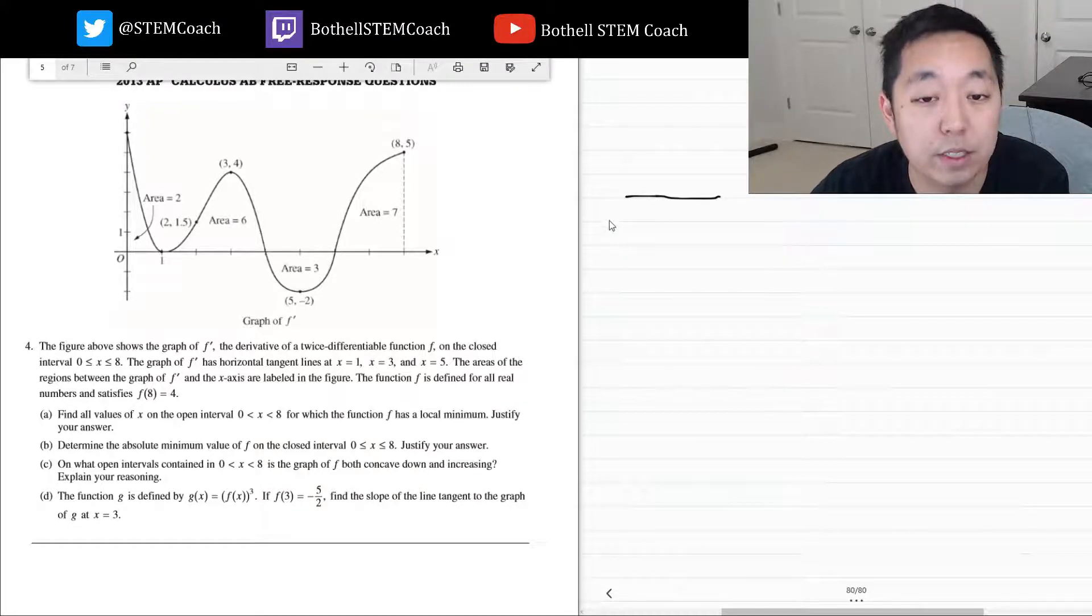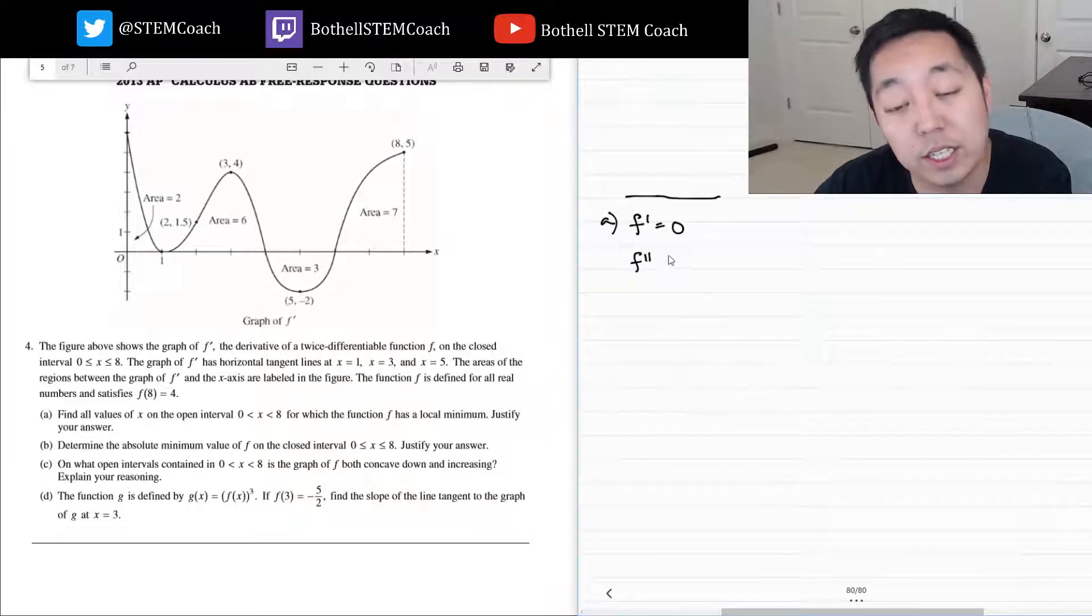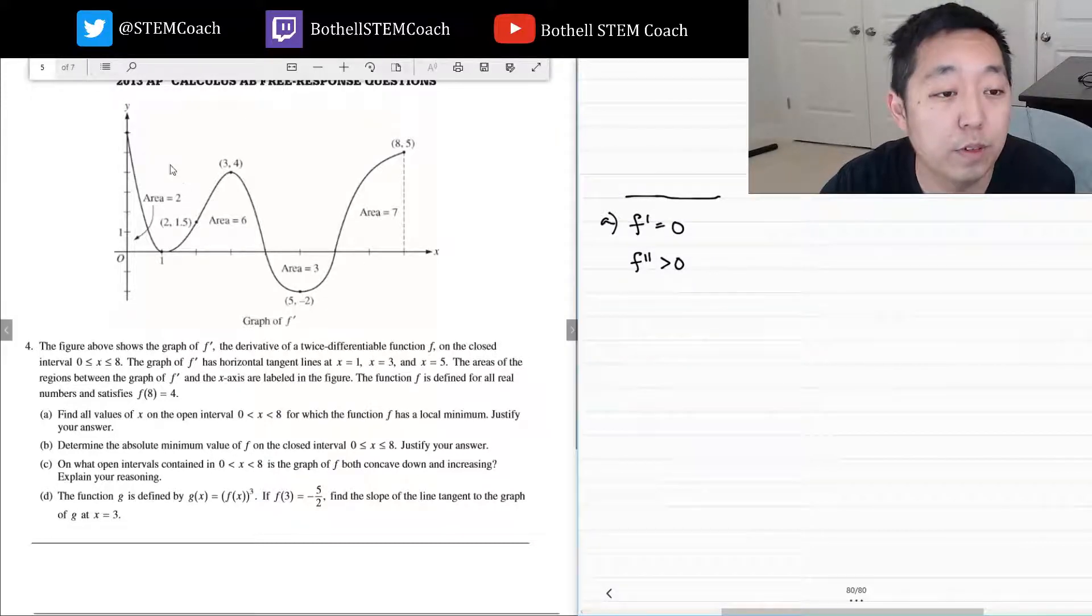For which f has a local minimum, the first derivative is 0 and the second derivative test, we're looking for points where the second derivative is concave up, so that's greater than zero. This is what we're looking for. The first derivative is zero, you can see where it is. These are candidates: x equals 1.